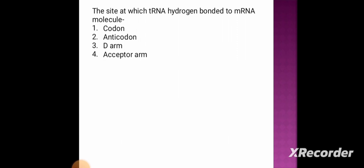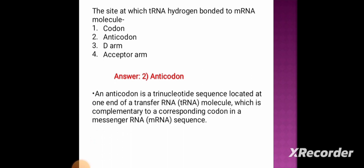Next question: the site at which tRNA is hydrogen-bonded to an mRNA molecule is — option 1: codon, option 2: anticodon, option 3: D-arm, option 4: acceptor arm. The correct answer is option 2, anticodon. The anticodon is a trinucleotide sequence located at one end of the tRNA molecule. It is complementary to a corresponding codon in the messenger RNA sequence.